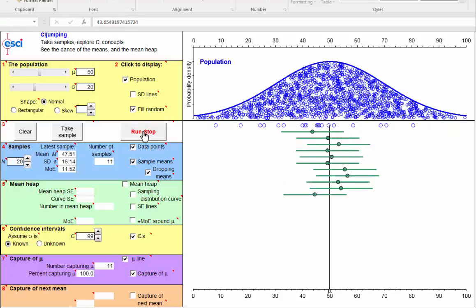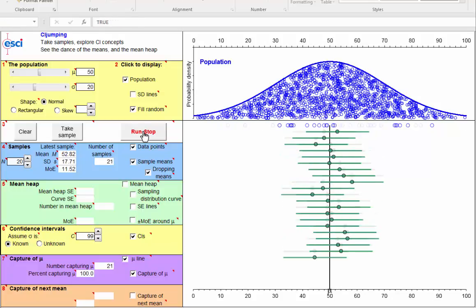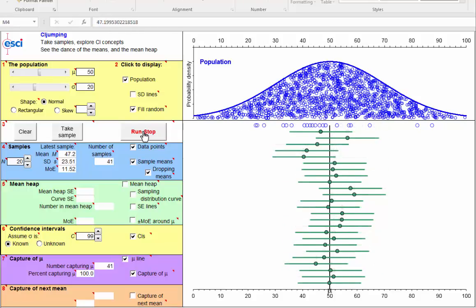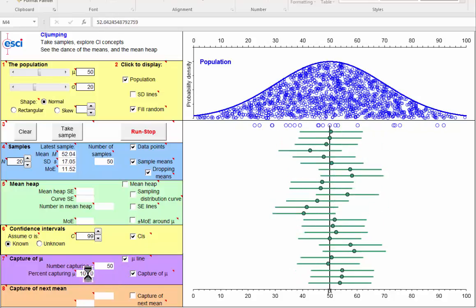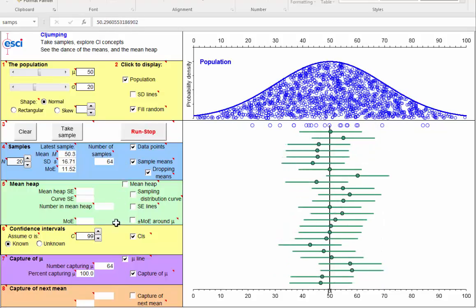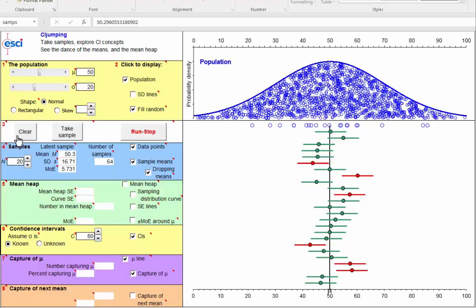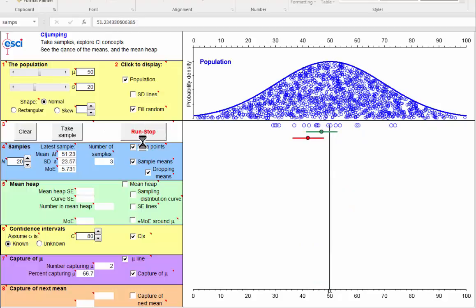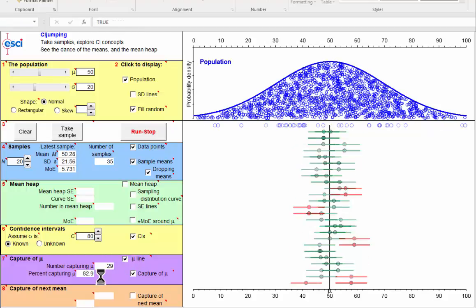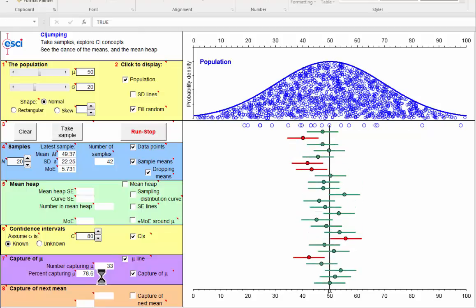Let's start again with 99% confidence intervals, and we would expect just 1% of intervals to be red. So we might have to wait for a while before we got very many. But in the longer term, we'd expect this percentage capture to settle down to 99. And of course, if we change down to, say, 90% or even 80% intervals, then the intervals would be distinctly shorter, and many more of them would be red. In fact, in the long term, we'd expect 20% of them to be red, and 80% to capture. Here we're sitting on 81%, 82%, 78% capturing.